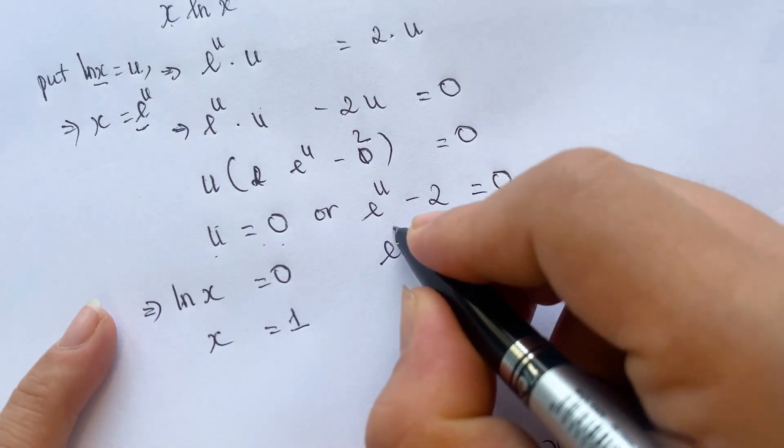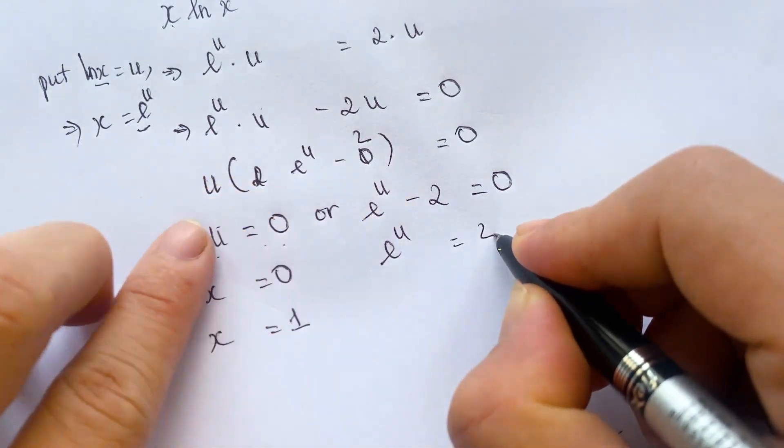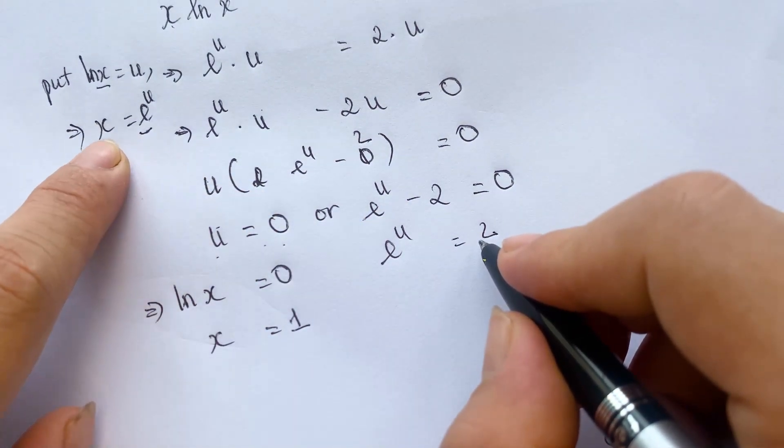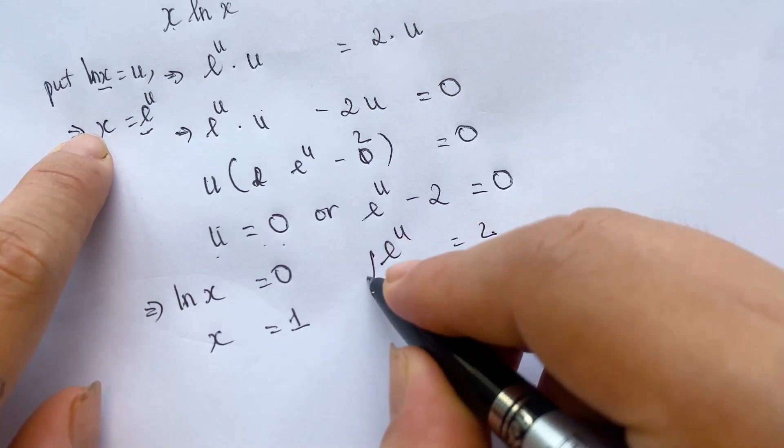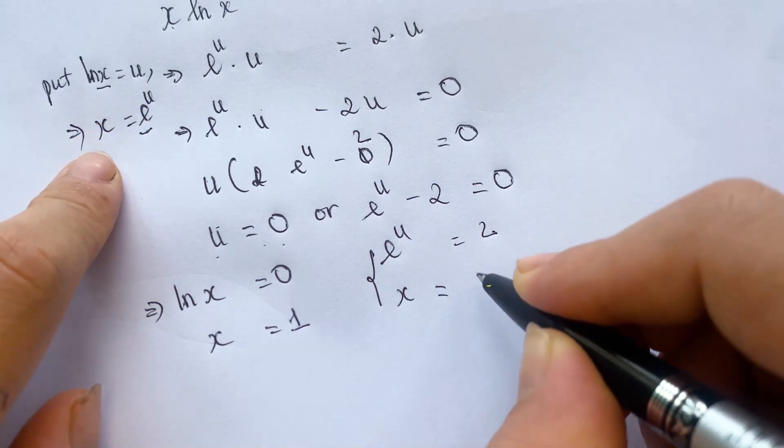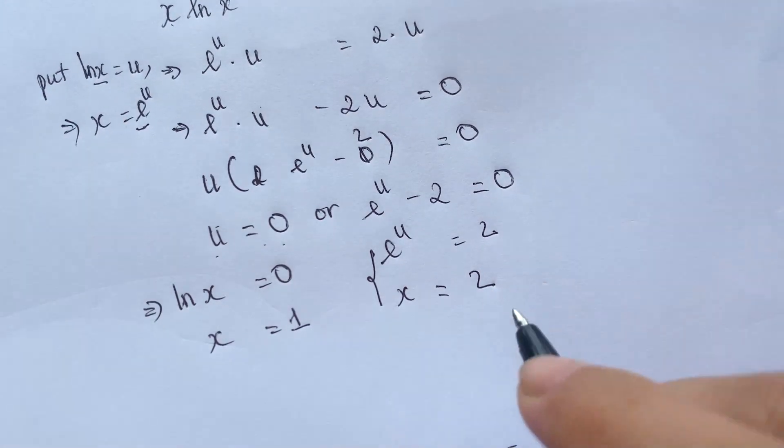And so, e power u equals 2. Everyone can see e power u equals x. Therefore, you also have x equals 2.